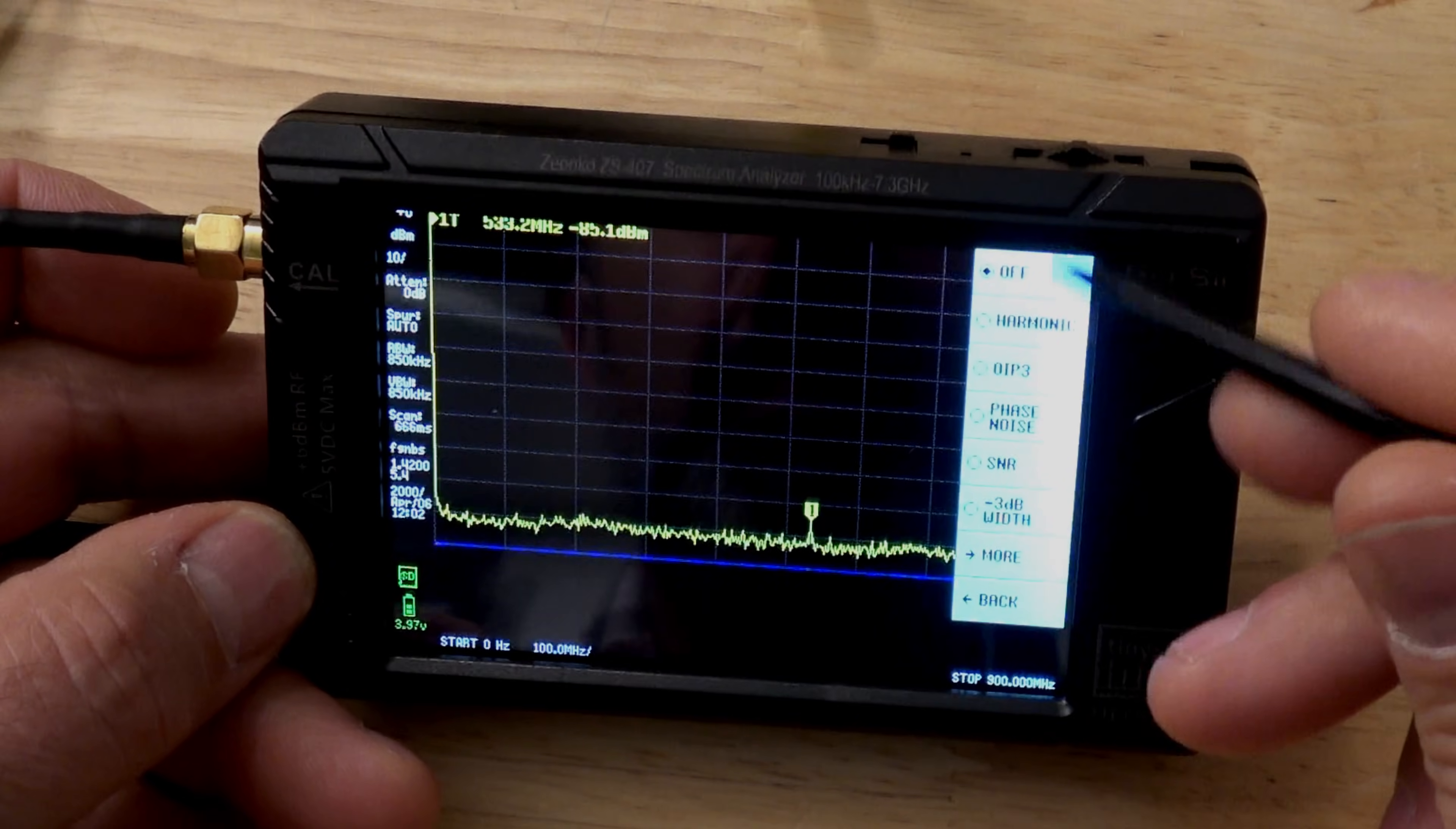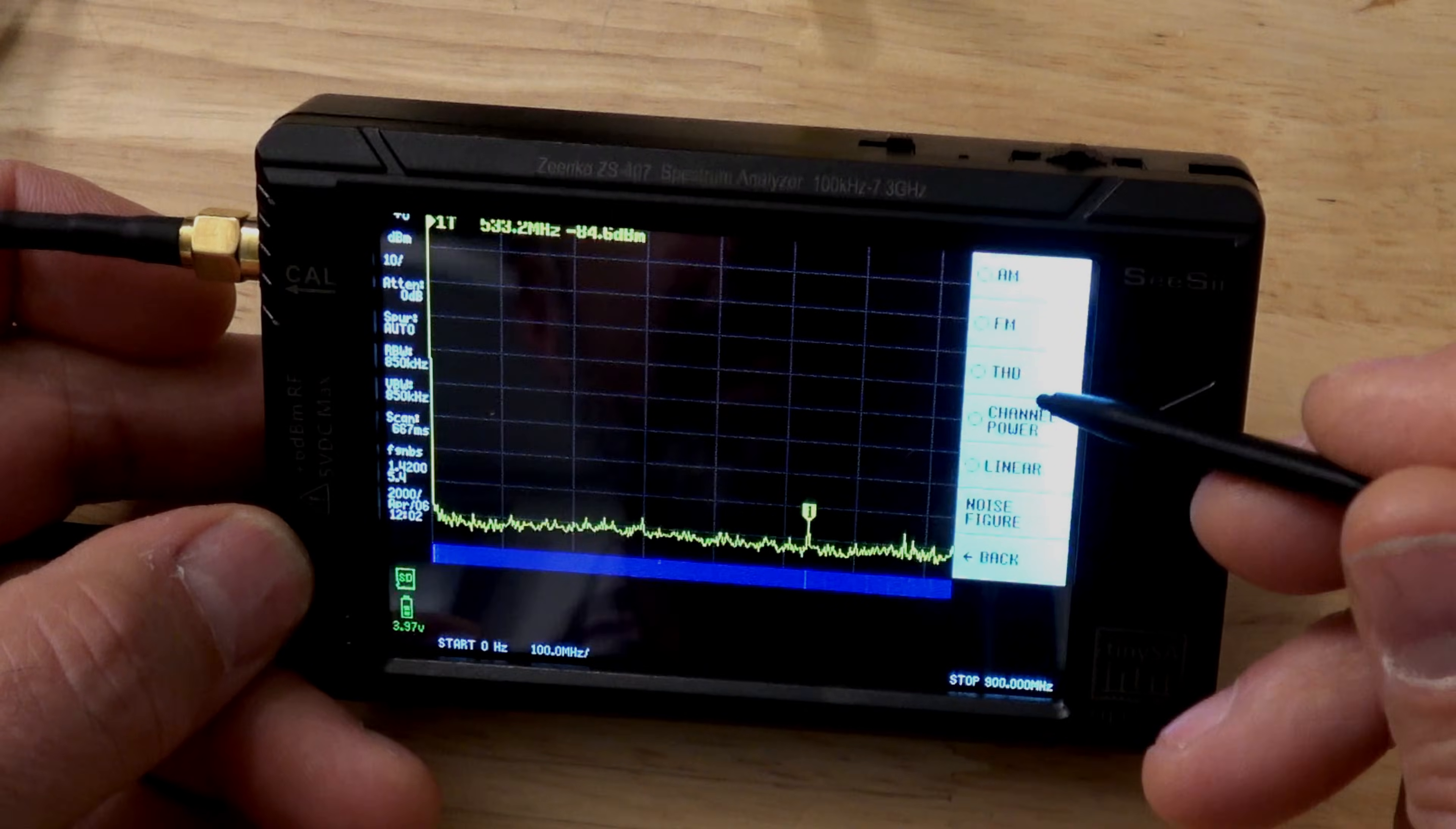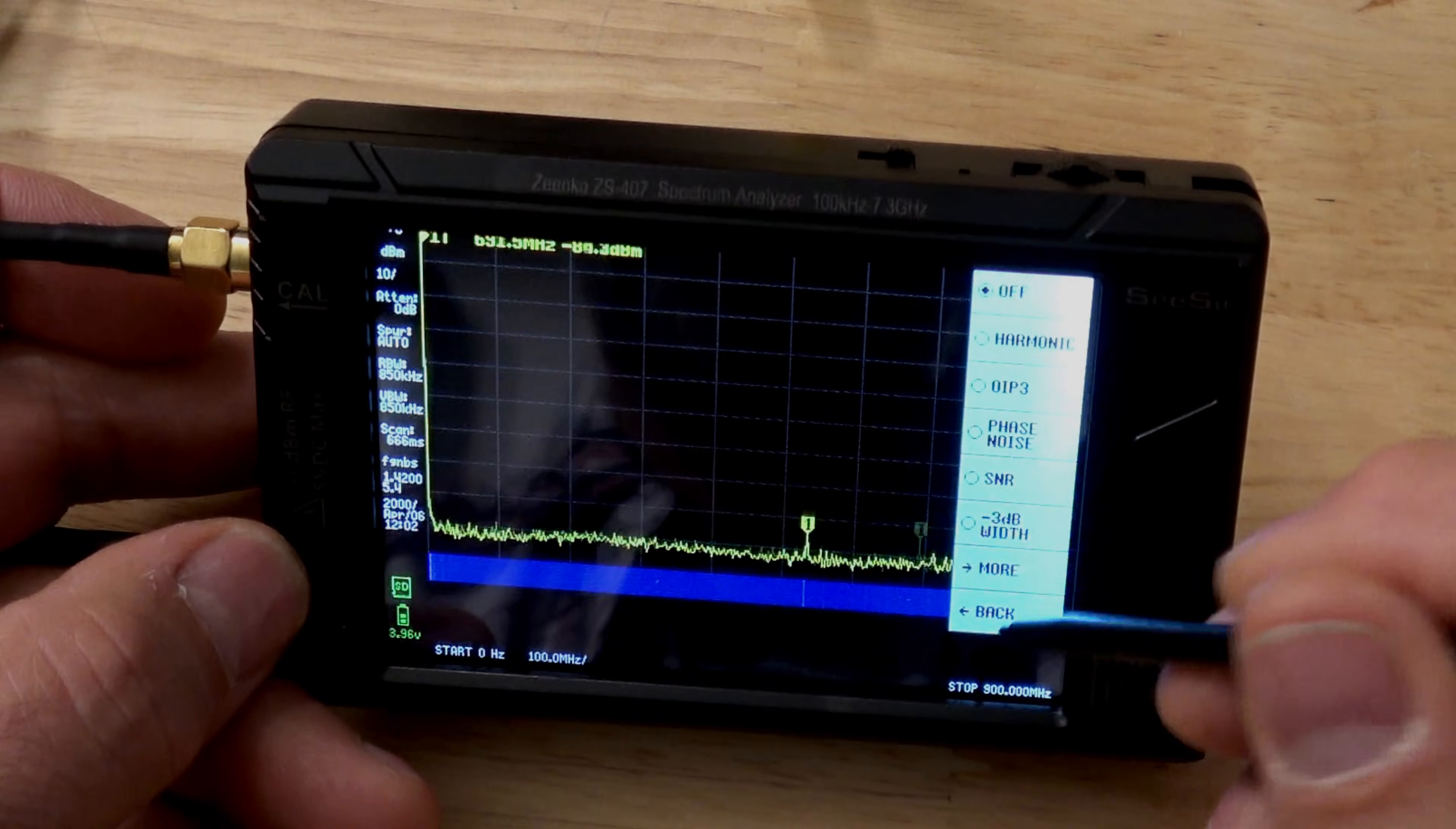And then we have measure. What kind of measurement? We were looking for harmonics, phase noise, signal noise ratio, then it has width choices, and AM, FM. I think that's THD, channel power, linear noise figure, and there we go. All right, we'll get out of that for a second.